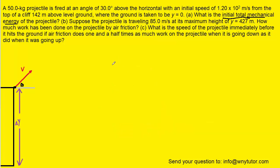For part B, we are asked to determine the amount of work that has been done on the projectile by air friction. Air friction is what we call a non-conservative force, so it's going to do some non-conservative work. That simply means that friction is going to remove some of the energy from the projectile.